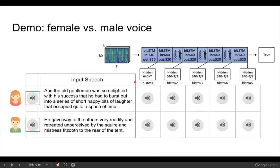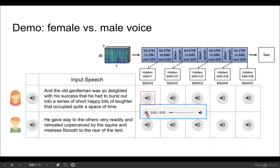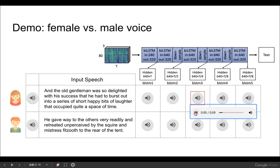After the first bidirectional LSTM layer for the female voice, and after the third bidirectional LSTM layer for the female voice, speaker information is slightly lost in layer 3. Proceeding to the last layer for both speakers, we can directly hear that the timbre and prosody of the speaker are gradually removed as the layer goes deeper.